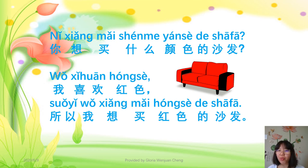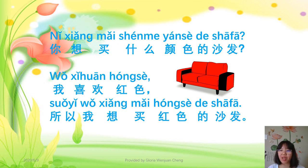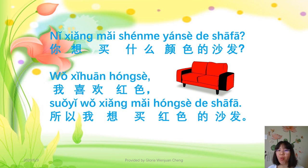A: 你想买什么颜色的沙发? B: 我喜欢红色，所以我想买红色的沙发. 想 means want, 颜色 means color, 沙发 means sofa. 你想买什么颜色的沙发 — What color of sofa do you want to buy? 我喜欢红色 — I like red. 所以 means so, 因为 means because. 所以我想买红色的沙发 — So I want to buy a red sofa. 再一遍: A: 你想买什么颜色的沙发? B: 我喜欢红色，所以我想买红色的沙发.